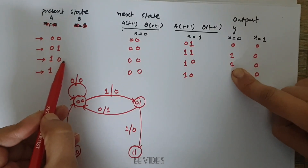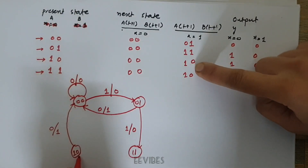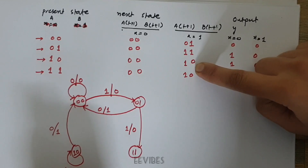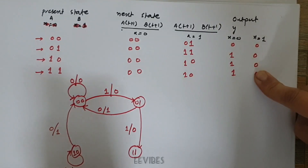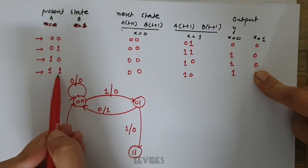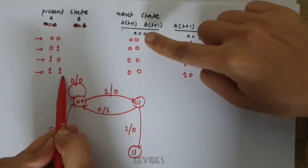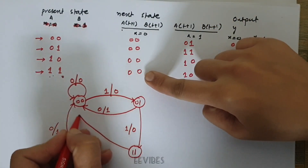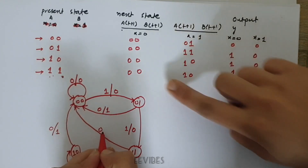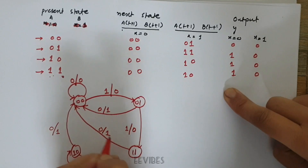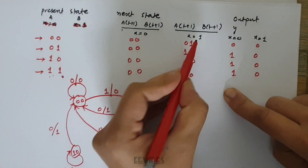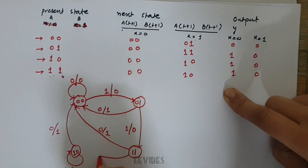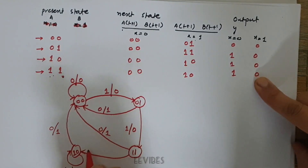If you are in the 1 0 state and input is equal to 1, it loops back to the same state — input was 1 and output is equal to 0. Finally, when you are in the 1 1 state and input x is equal to 0, you loop back to the 0 0 state and the output function is equal to 1. When in the 1 1 state and input is equal to 1, the next state is 1 0 and the output is equal to 0.